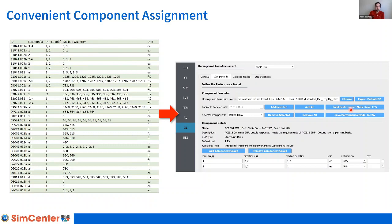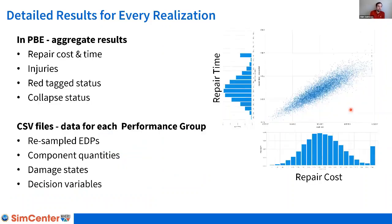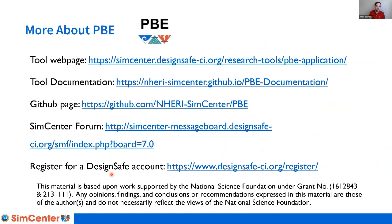Once you set up everything and run the analysis, PBE provides an overview of the results with histograms and joint distribution plots like these for many different decision variables you might be interested in. But if you are a researcher and want to go deeper and understand what happened to each performance group in the building, we also provide CSV files you can use in post-processing to learn about the EDPs, the component quantities, the damage states, or the decision variables for each performance group. I have a slide with links you can use to learn more about this tool at the end.